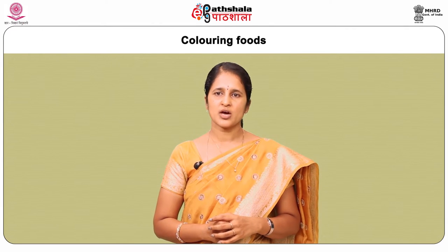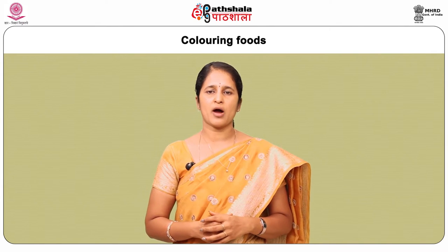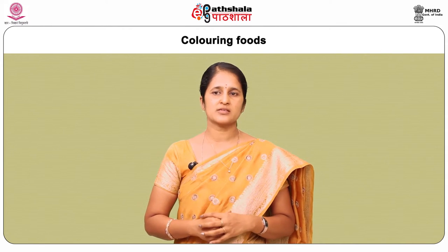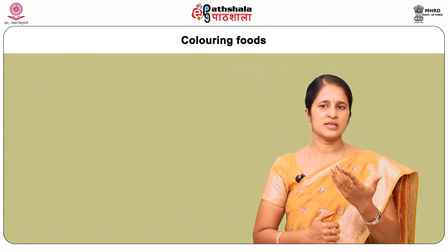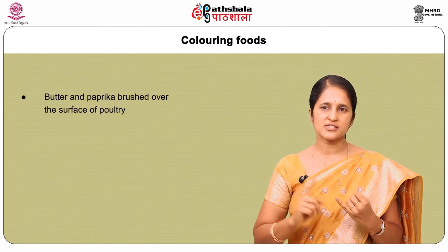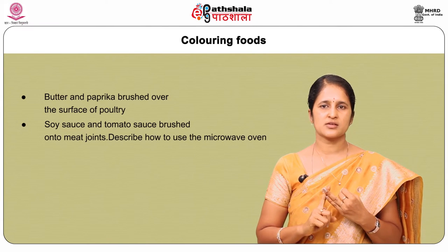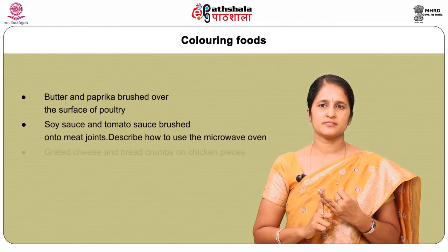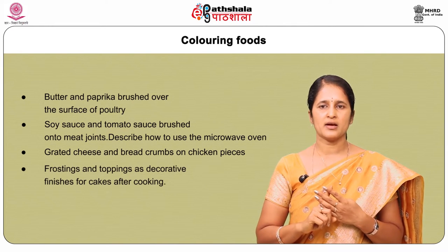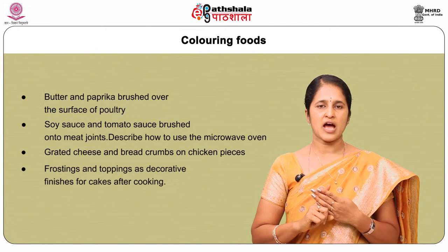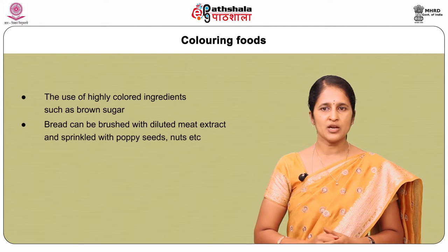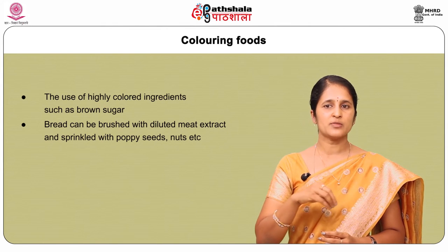Color can be developed using modifications of microwave equipment. Commercially available browning powders can be used, and experimentation with normal kitchen ingredients provides numerous ways of achieving surface color. Methods include: butter and paprika brushed over the surface of poultry; soy sauce and tomato sauce brushed onto meat joints; grated cheese and breadcrumbs spread on chicken pieces; frosting and topping as decorative finishes for cakes; use of highly colored ingredients such as brown sugar; and bread brushed with diluted meat extract and sprinkled with poppy seeds and nuts.